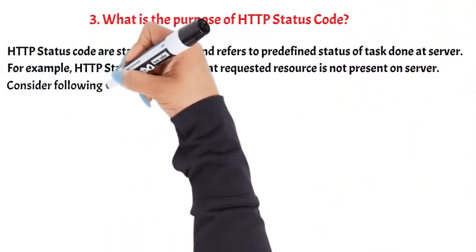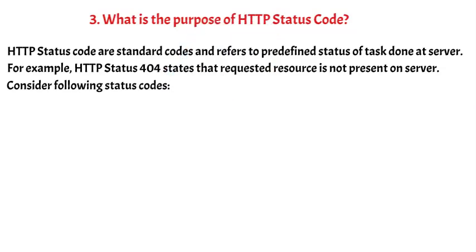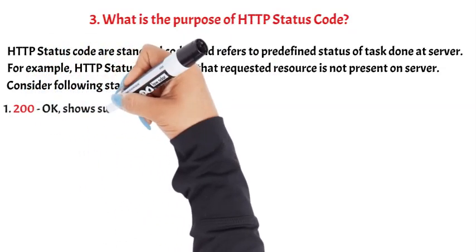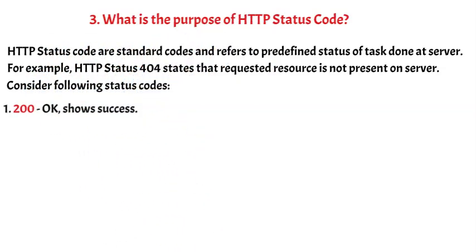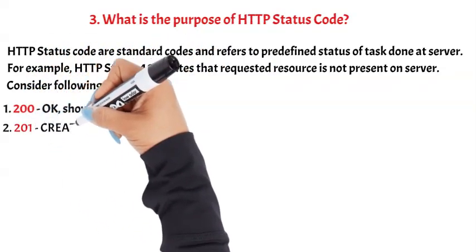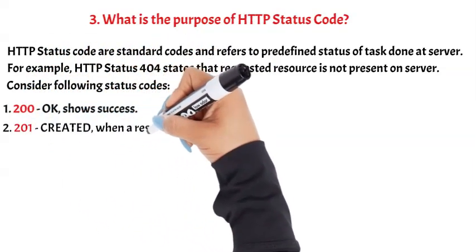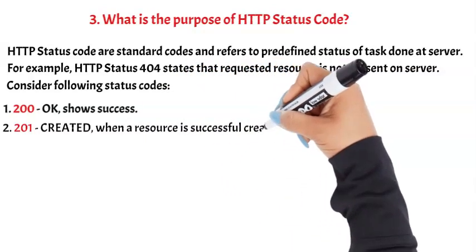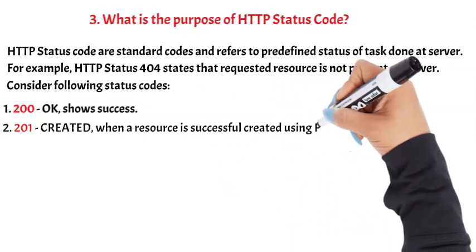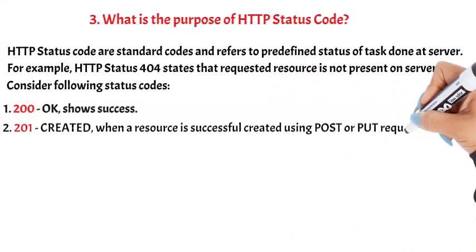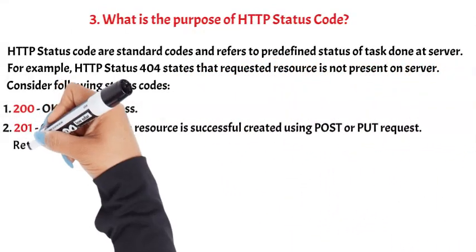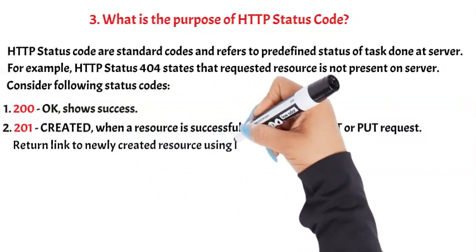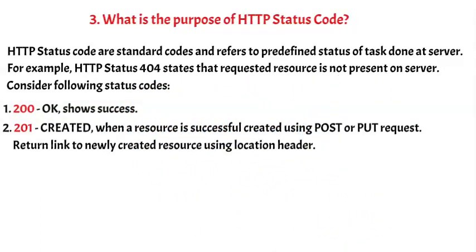Consider the following status codes. 1. 200 OK — shows success. 2. 201 Created — when a resource is successfully created using a POST or PUT request. Returns a link to the newly created resource using the location header.